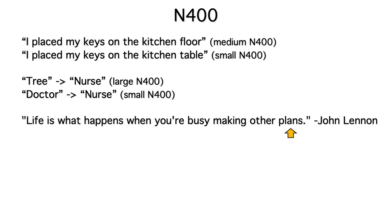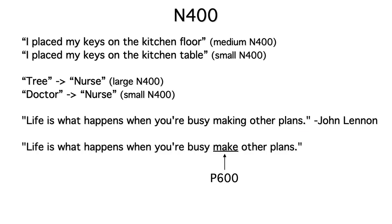But keep in mind that the N-400 is about the predictability of the meaning, not about syntactic predictability. If we make the sentence grammatically incorrect by changing 'making' into 'make,' you wouldn't get an N-400 to 'make.' Instead, you'd get a different component called P-600.